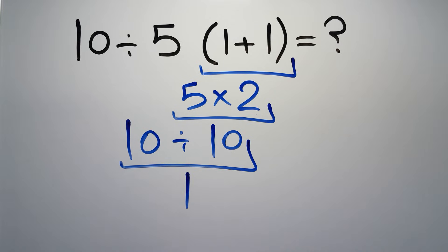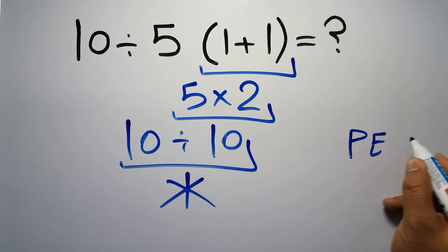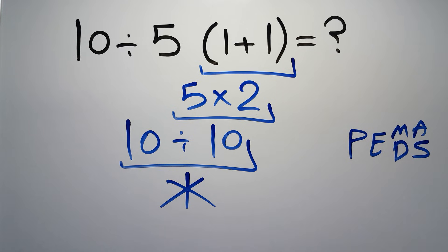But this answer is not correct because according to the order of operations, first we have to do parentheses, then exponents, then multiplication or division, and finally addition or subtraction. Remember that multiplication and division have equal priority and we have to work from left to right. The same applies to addition and subtraction.